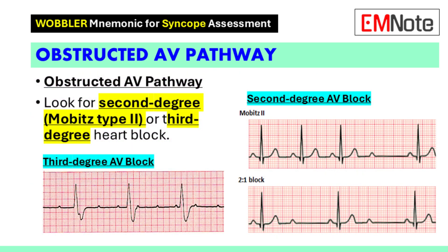An obstructed atrioventricular pathway involves conduction delays or blocks within the atrioventricular node. Signs of this condition include second-degree heart block, specifically Mobitz type 2, or third-degree heart block on the electrocardiogram. Identifying these patterns is essential for determining the underlying cause of syncope.